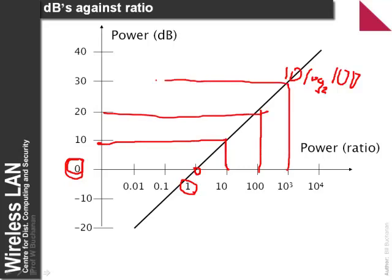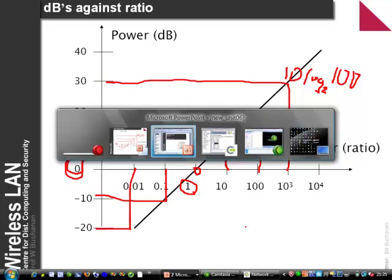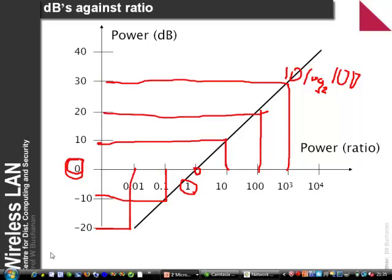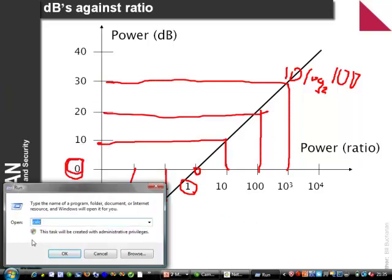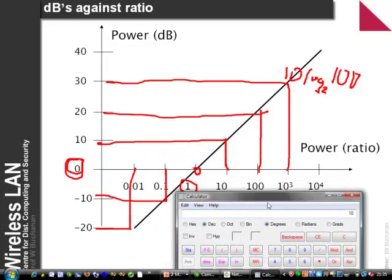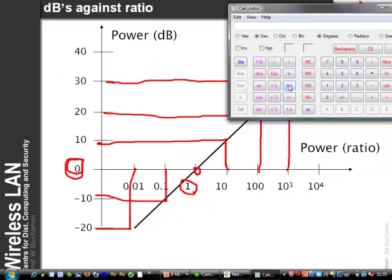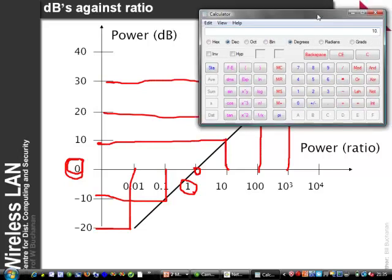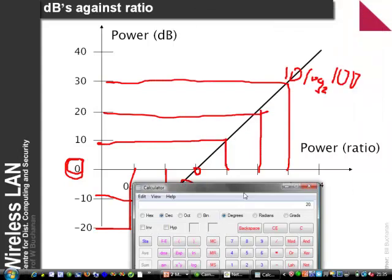A ratio of 1000 gives 30 dB, and so on. We can verify this on a calculator: for a ratio of 10, log multiplied by 10 gives 10 dB. For 100, log multiplied by 10 gives 20 dB.